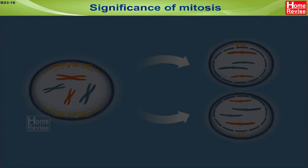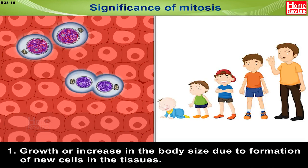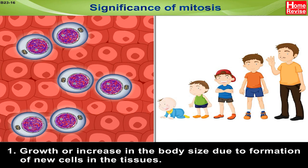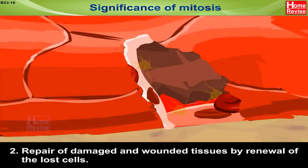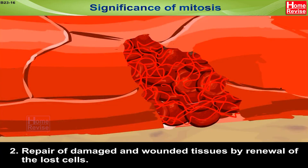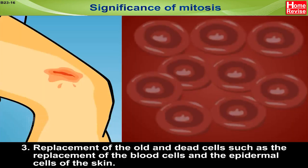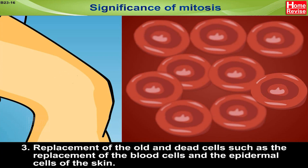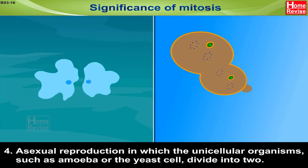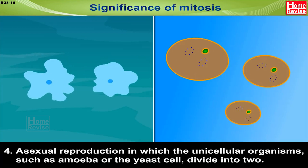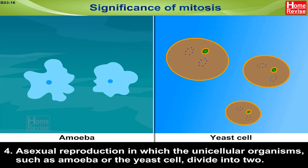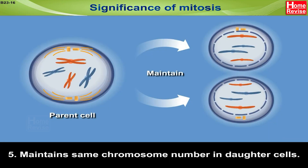Significance of mitosis: 1. Growth or increase in body size due to formation of new cells in the tissues. 2. Repair of damaged and wounded tissues by renewal of lost cells. 3. Replacement of old and dead cells, such as the replacement of blood cells and epidermal cells of the skin. 4. Asexual reproduction in which unicellular organisms such as amoeba or yeast divide into two. 5. Maintains the same chromosome number in daughter cells.